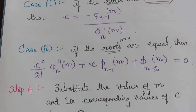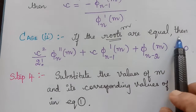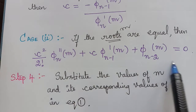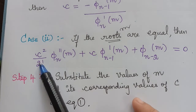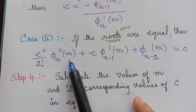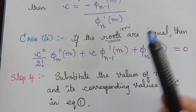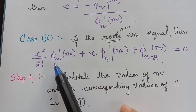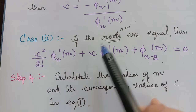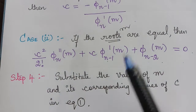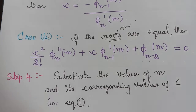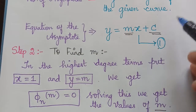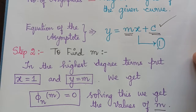If any of the values of m are equal — that is, if the roots are equal — then to find the value of c we need to substitute φₙ″(m), φₙ₋₁′(m), and φₙ₋₂(m) in the corresponding equation. After finding the values of m and c, we substitute them in the asymptote equation y = mx + c to get the equation of the asymptote.